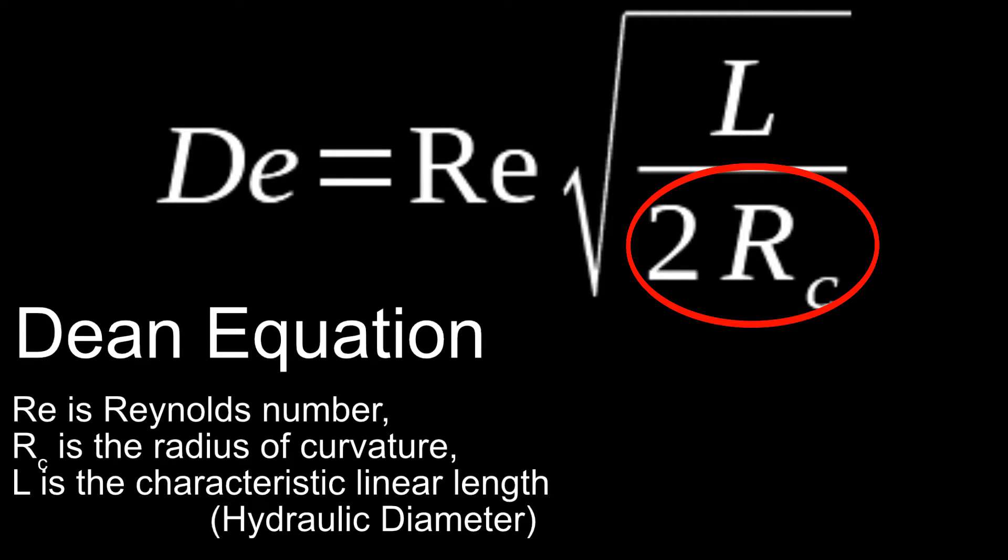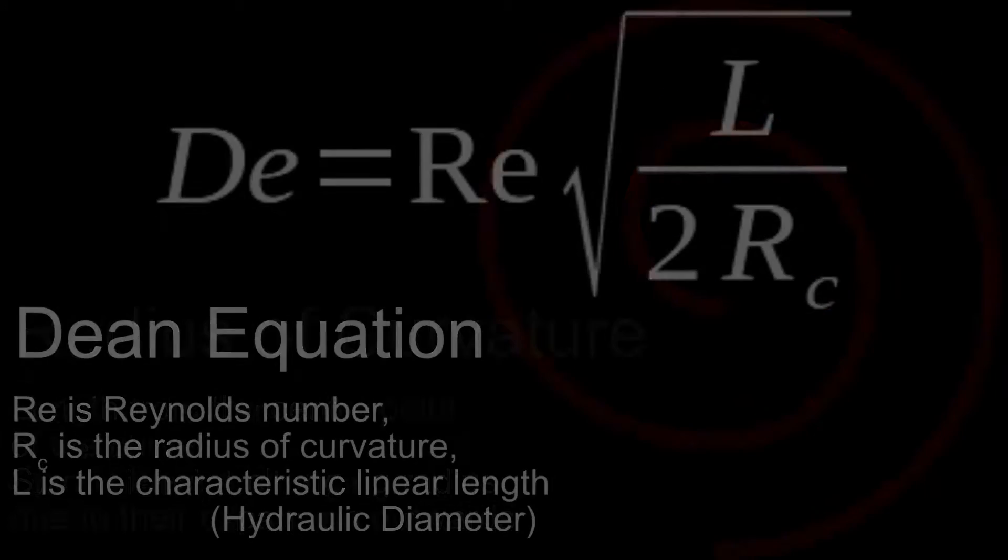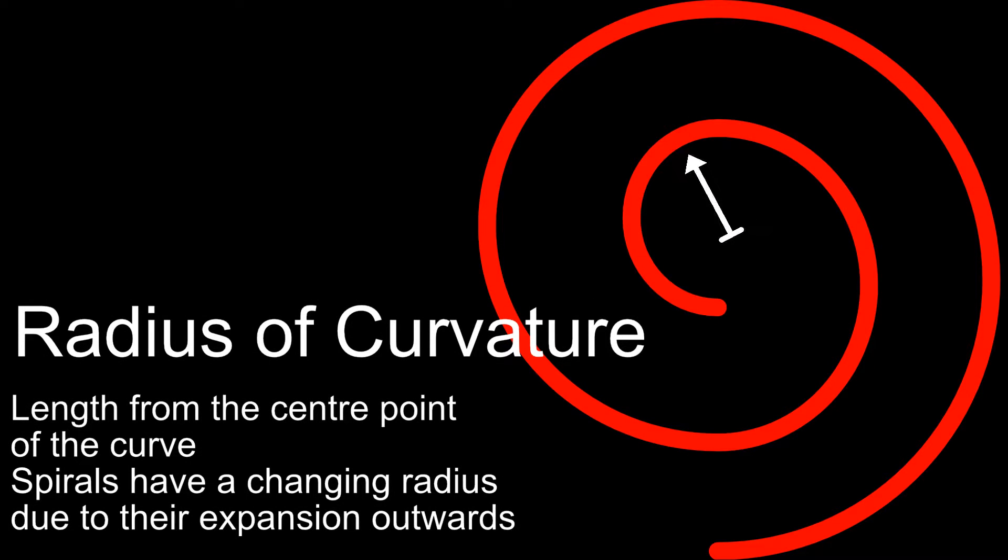The Dean number will decrease in spiral microfluidic devices due to the increasing radius of curvature.